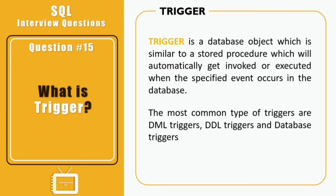Question fifteen: what is a trigger? A trigger is a database object similar to a stored procedure that automatically gets invoked or executed when a specified event occurs in the database. The most common types are DML triggers, DDL triggers, and database triggers. DML triggers are invoked when a DML operation like INSERT, UPDATE, or DELETE occurs on a table — they can be configured to fire before or after the DML operation. DDL triggers are invoked when DDL operations like CREATE, ALTER, or DROP occur. Database triggers are invoked when a database session is established or shut down.